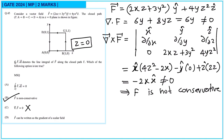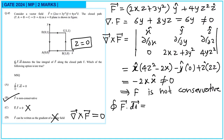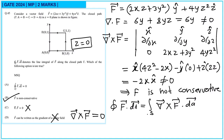Option B is correct. Since del cross F is not zero, we cannot write F as a gradient, so that option is wrong. For the line integral, applying Stokes' theorem: the surface integral of del×F dotted with dA. Since del×F has only an x-cap component and dA has a z-cap component, x-cap dot z-cap equals 0, making the line integral equal to zero. So options A and B are correct.